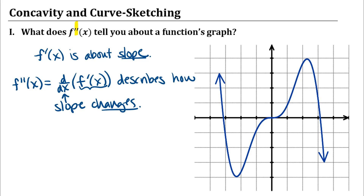I'm going to pick some points on the graph and estimate the slope of tangent lines at a few different points. I picked a point on the far left side of the graph, and that slope of the tangent line is definitely negative. I'm going to estimate that slope is about negative 10 right there — if you count down 10 dots and over one little dot on the graph paper. Then picking another point over here, I might estimate the slope is about negative 3, maybe about negative 3.5.